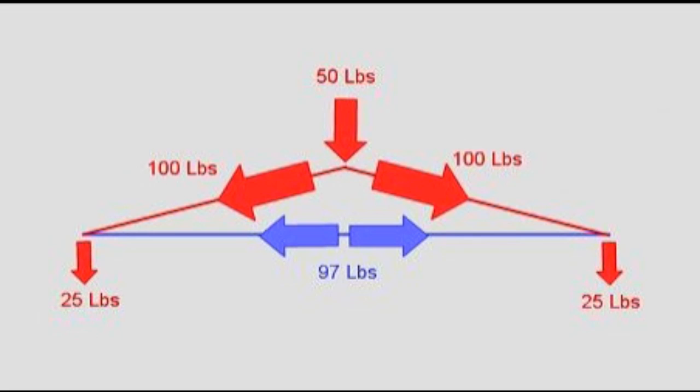If we shrink this triangle and make it a lot lower, we've got 50 pounds at the top but it produces a hundred pounds of compression in each top strut and 97 pounds of compression across the bottom, but you still have 25 pounds resting on each foot. This shows that as the triangle gets squatter, the forces increase quite dramatically.